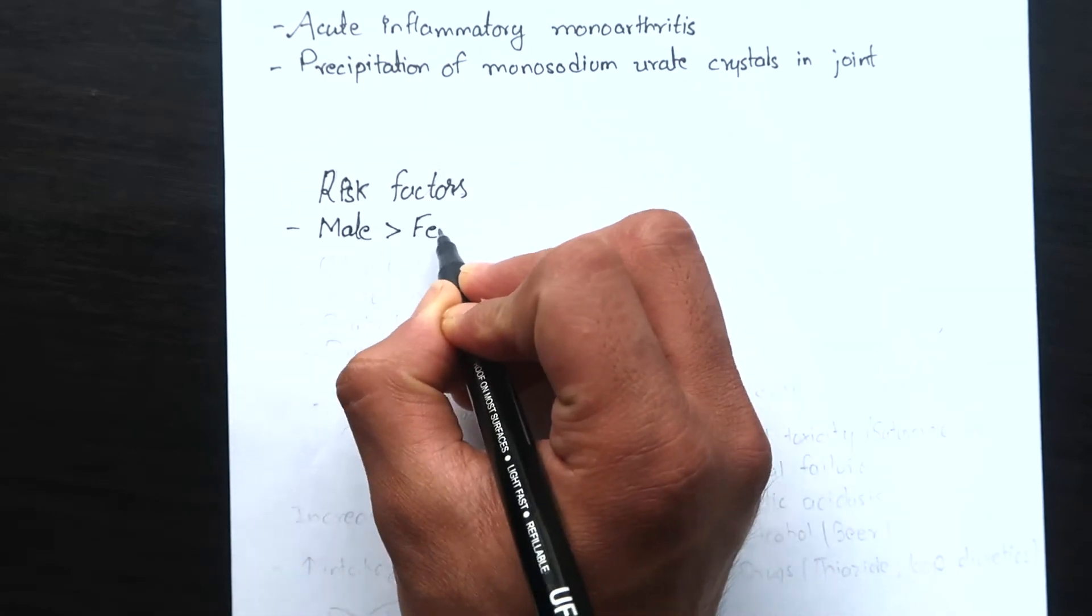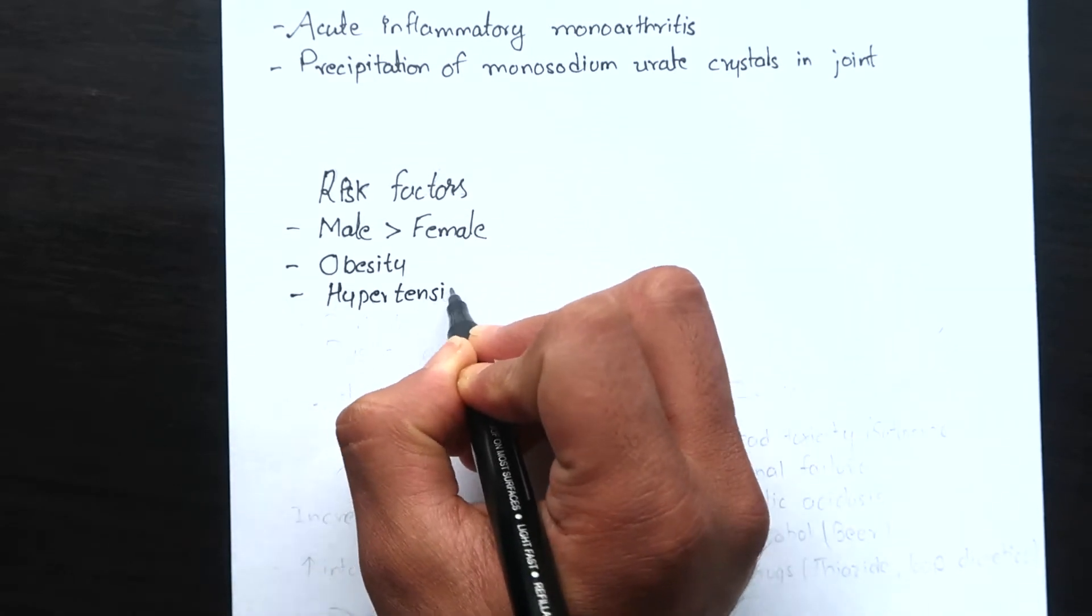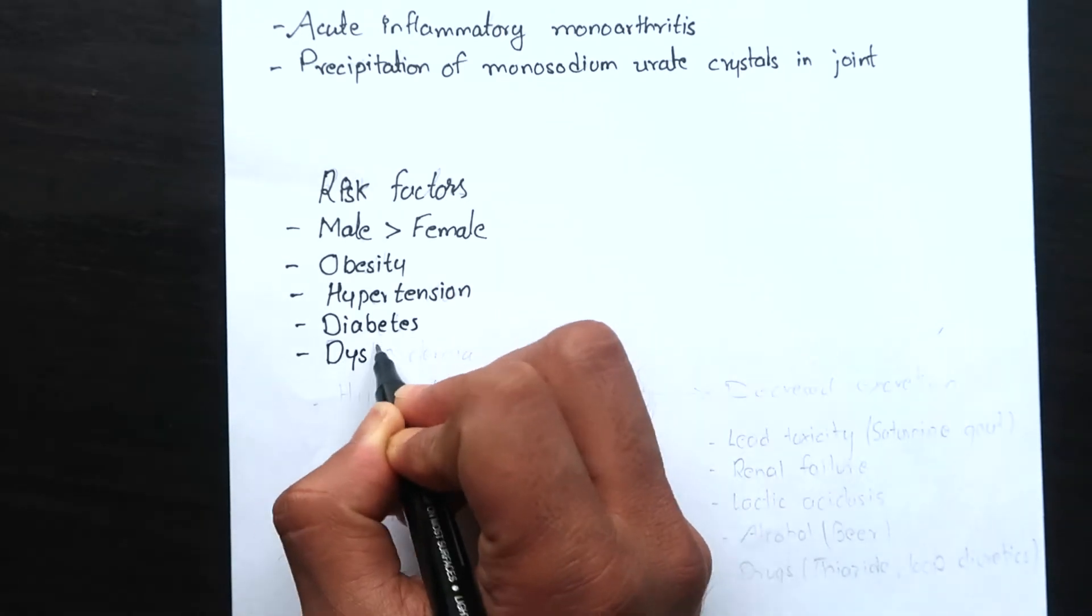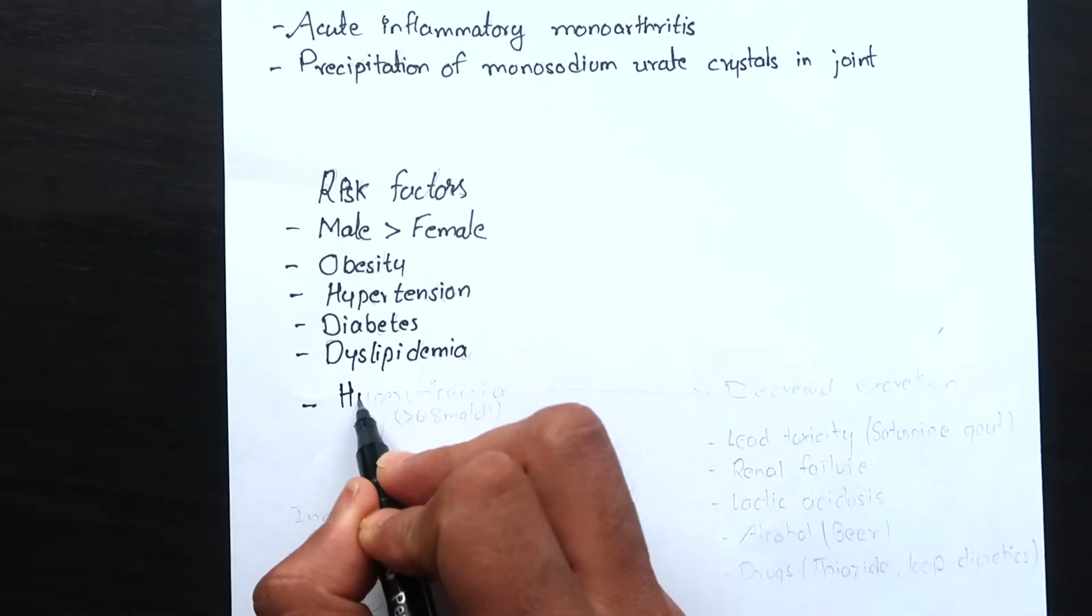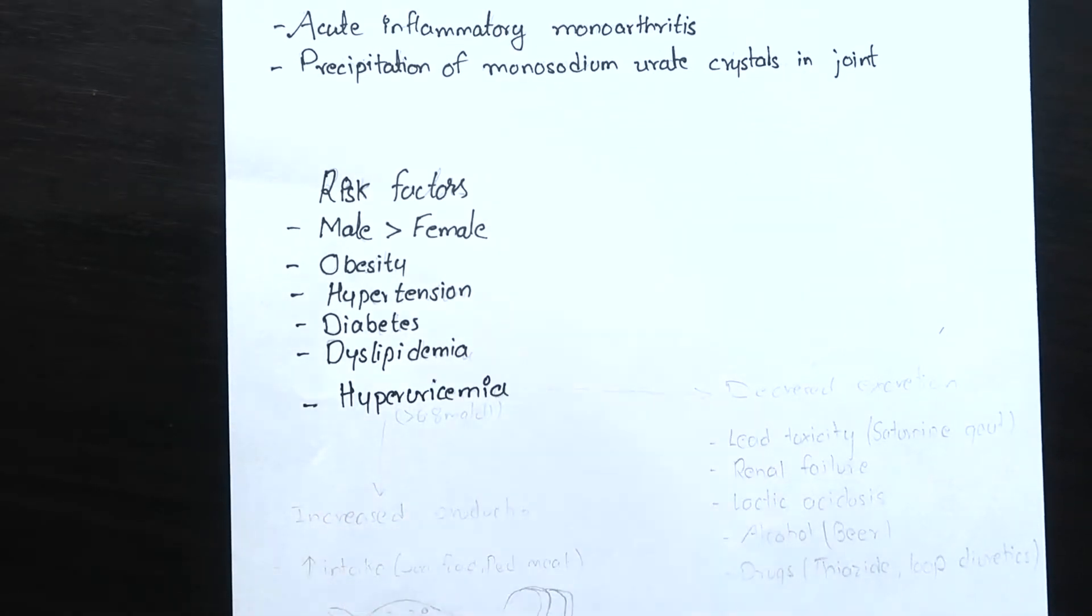hypertension, diabetes, dyslipidemia and the major risk factor is hyperuricemia, i.e. uric acid level above 6.8 mg per deciliter.